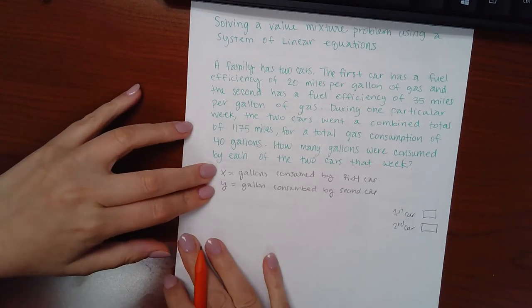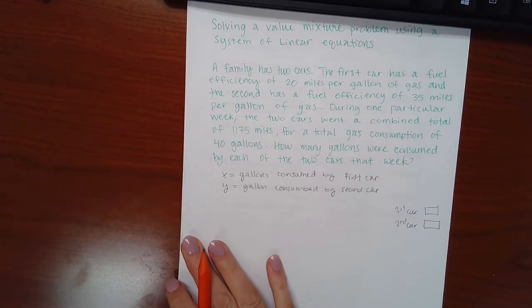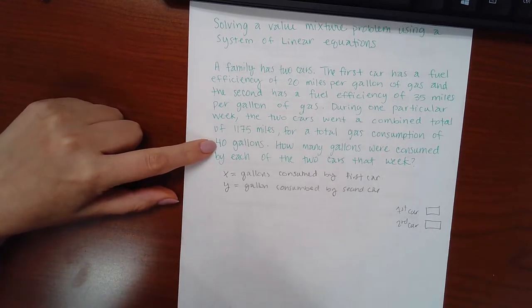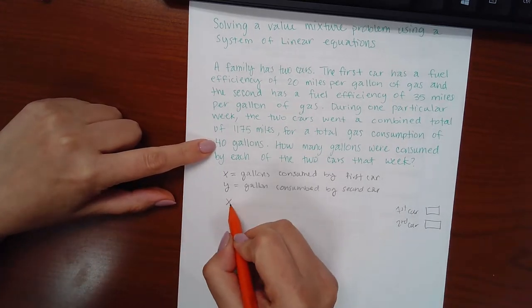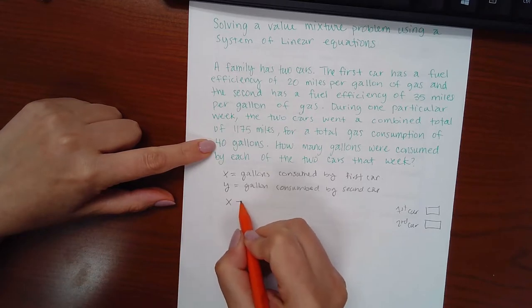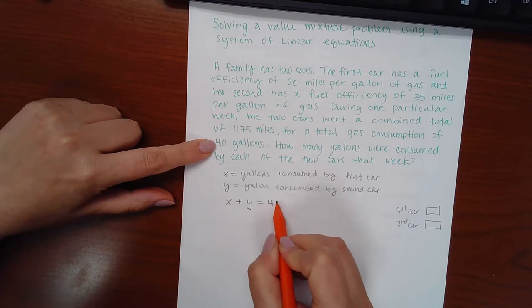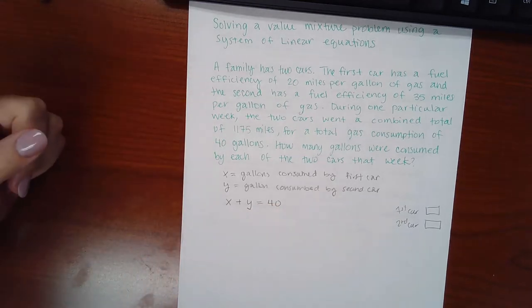So it talks about the gallons, and I do know something about gallons. I know that they both consume together 40 gallons. So that means the gallons the first car consumed plus the gallons the second car consumed should equal 40. So that's one equation that I have.